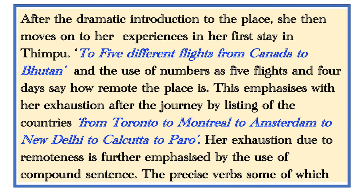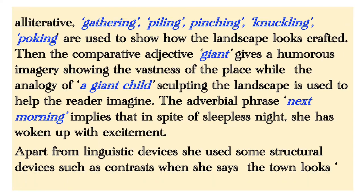Moving to the next paragraph: after the dramatic introduction to the place, she moves on to her experiences in her first stay in Thimpu. References to five different flights from Canada to Bhutan and the use of numbers — 'five flights' and 'four days' — convey how remote the place is. This is further emphasized by listing countries: Toronto, Montreal, Amsterdam, New Delhi, Calcutta, to Pyro. Her exhaustion due to remoteness is further emphasized by the use of compound sentences. The precise verbs — some alliterative — 'gathering,' 'piling,' 'pinching,' 'knuckling,' 'poking' — are used to show how the landscape looks crafted.